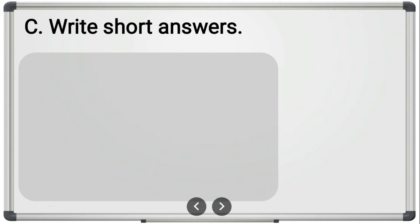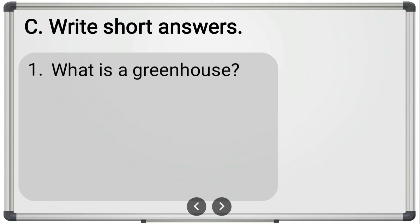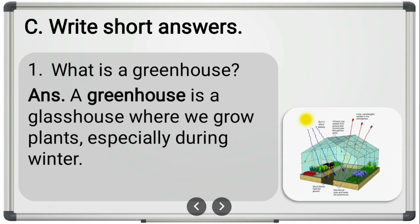Let us now see the short answer questions. The first question is: 'What is a greenhouse?' A greenhouse is a glass house where we grow plants, especially during winter. It is made out of glass so that sunlight can get into it.